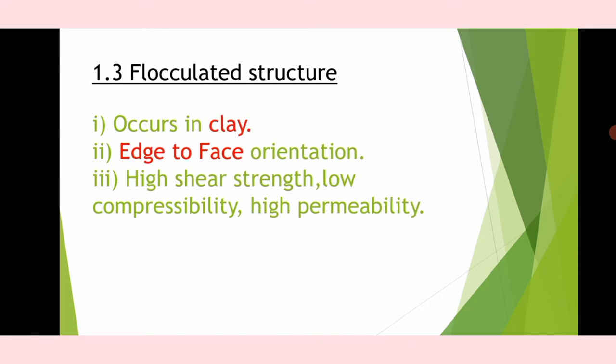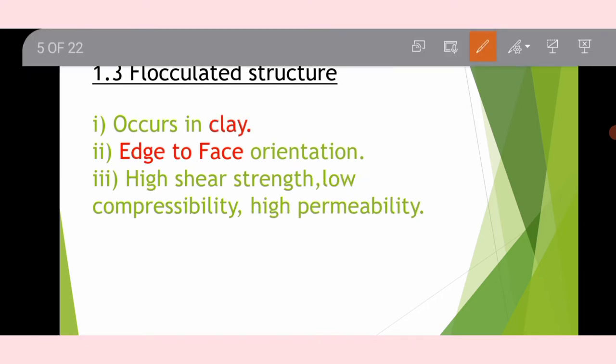Flocculated structure occurs in clay and has an edge-to-face orientation. It exhibits high shear strength, low compressibility, and high permeability.